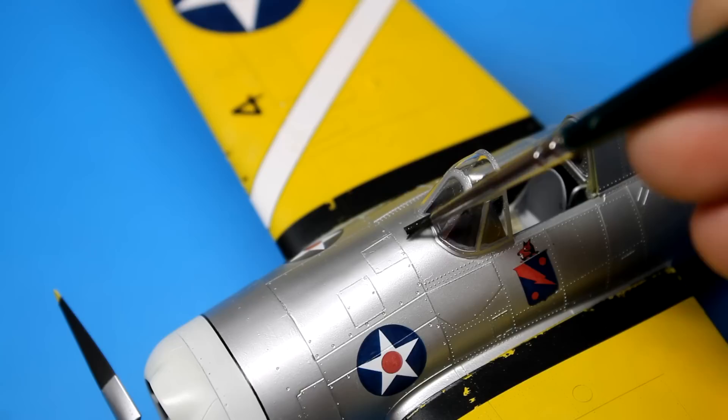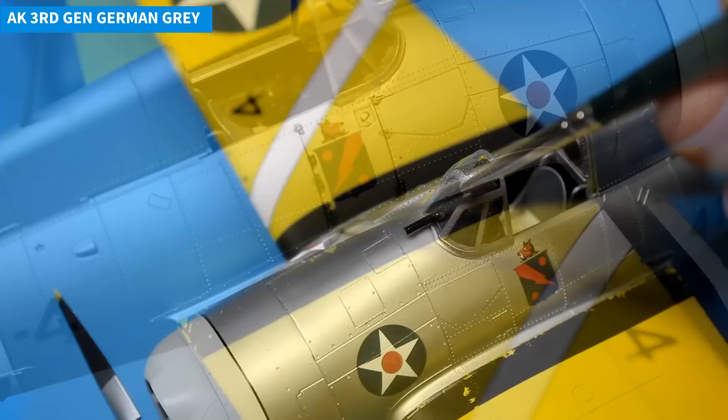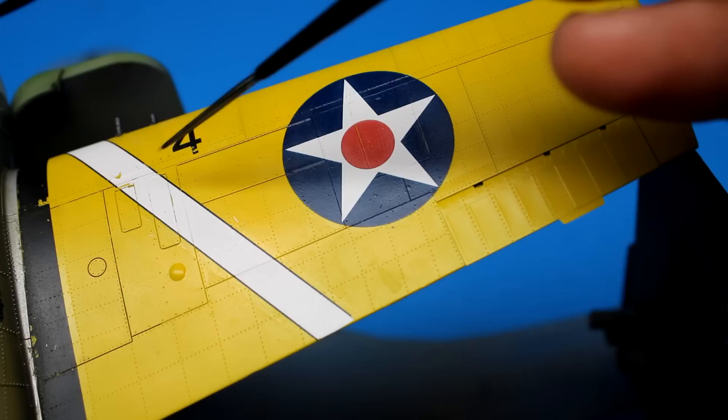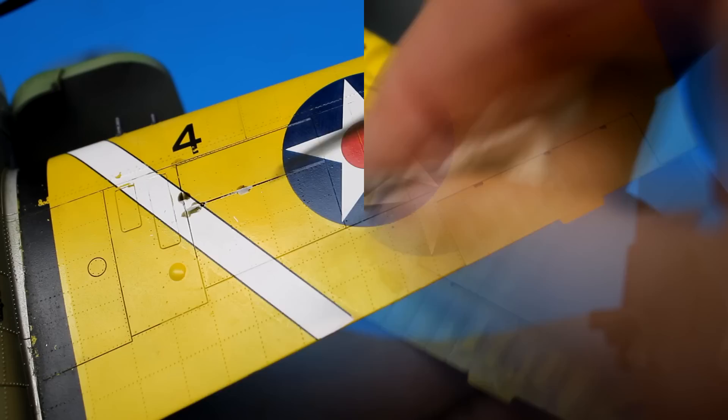I applied two thin coats of flat clear to the wings but didn't apply any clear coat to the fuselage so I would keep that luster. So the panel line wash you're seeing here is going directly on top of decals on the fuselage and once that panel line wash has had some time to dry I wipe it away with a clean cloth.